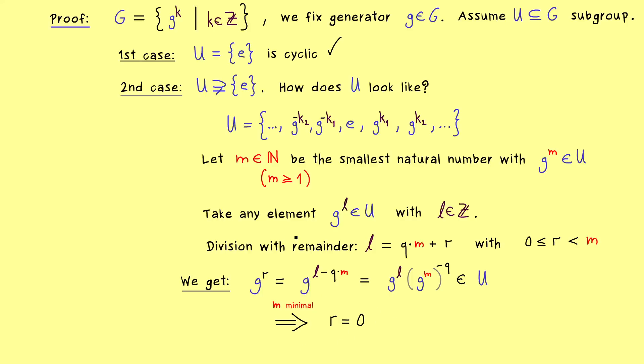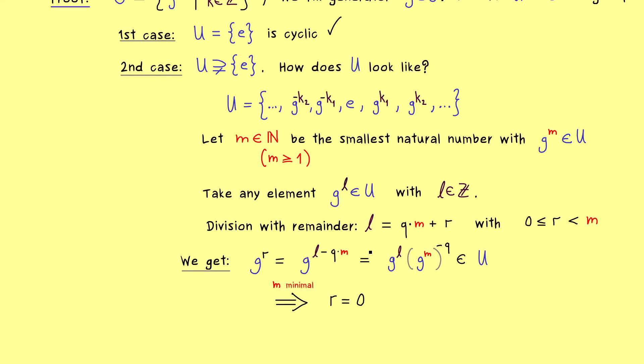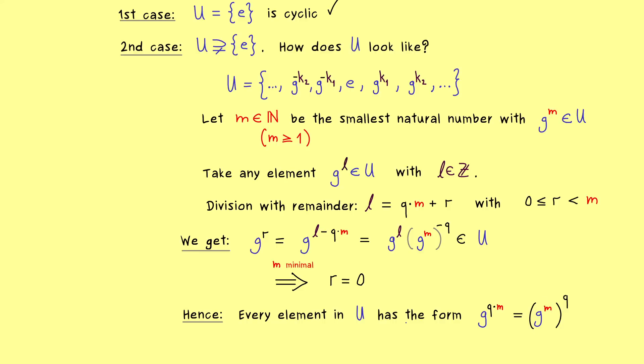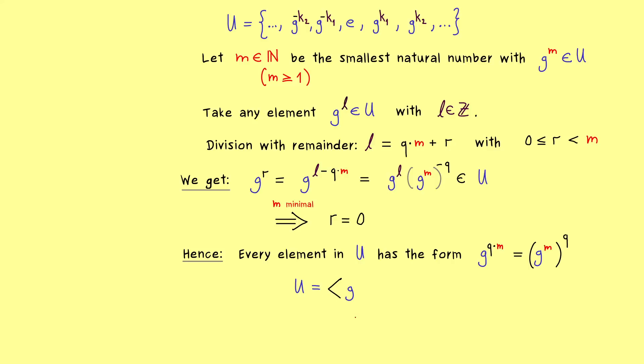Which also means that the division with remainder is actually without a remainder. Hence, every integer l we can use can be actually written as a product q times m. So no matter which element in U we choose, we see it has a very special form. Namely, it's g to the power q times m, where q is an integer and m is our minimal chosen natural number. And there you see, we can write it as g to the power m to the power q. And obviously you see, if q is any integer, we will not leave our subspace U and therefore our g to the power m is our generator. Indeed, what we get is exactly the equality. U is equal to the subgroup that is generated by g to the power m. And that's all we wanted to show, because we see that U is a cyclic subgroup.